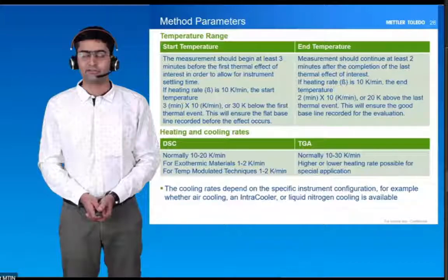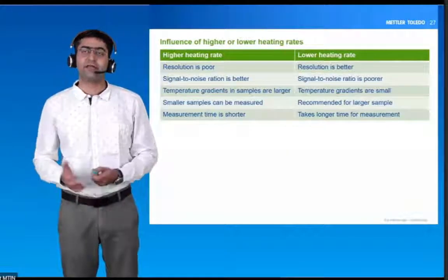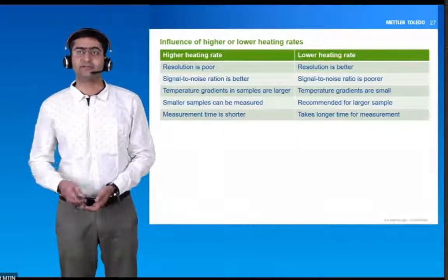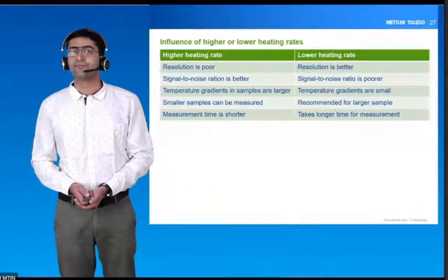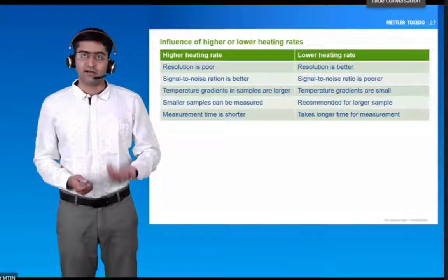What is the influence of heating rate and cooling rate? If you have a higher heating rate, the resolution is poorer; with a lower heating rate, you have better resolution. Signal-to-noise ratio is better with a higher heating rate, whereas it is poorer at lower heating rates. The temperature gradient is higher with a larger sample at higher heating rates, whereas at a lower heating rate the temperature gradient is minimized. Measurement time is shorter with a higher heating rate and longer with a lower heating rate.